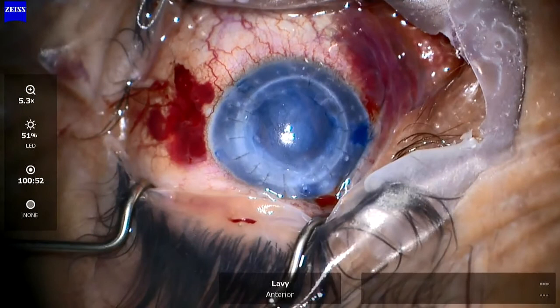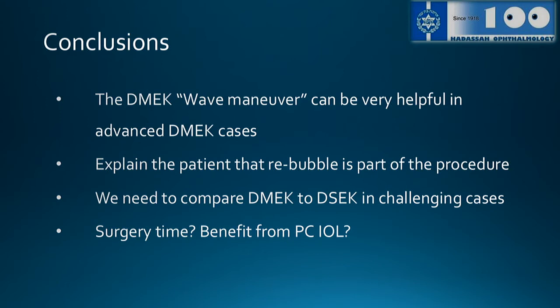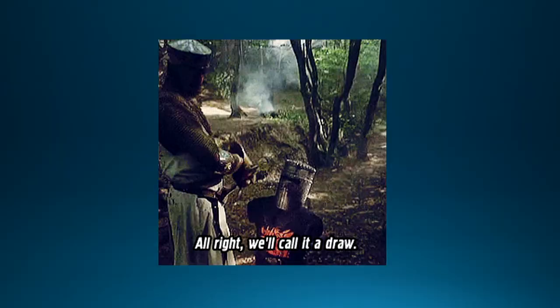In conclusion, the DMEK wave maneuver can be very helpful in advanced DMEK cases, especially when you have a compromised anterior chamber. You need to explain to the patient that rebubbling is part of the procedure. We need to compare DMEK to DSAEK in challenging cases and we are doing that right now. Of course, we have to consider removing and replacing the lens when we have an anterior chamber IOL, to assess whether there is more benefit with a posterior chamber IOL. Thank you very much — it was a pleasure being here.